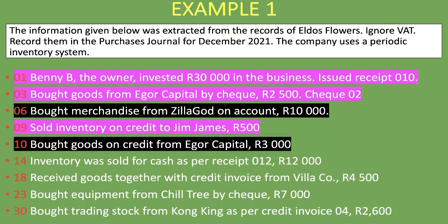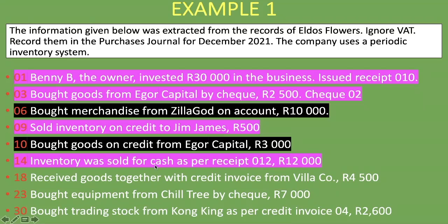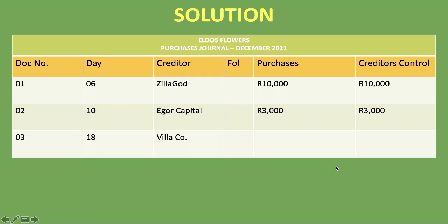On the 14th, inventory was sold for cash per receipt 012 for 12,000 rand — this does not go into the purchases journal. On the 18th, goods were received together with a credit invoice from Villa Core for 4,500 rand. Since we received a credit invoice, we bought these goods on credit, so it goes in the purchases journal: document number 03, day 18, creditor Villa Core, 4,500 rand in both columns.